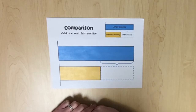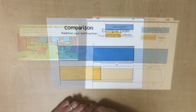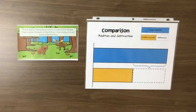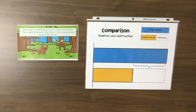Specific comparison recording sheets have been provided for each story problem in this part of the unit. A common misconception when attempting to solve story problems is a reliance on keywords. Rather than understanding the structure of the problem, the student may make a plan solely based on a word they read in the problem. For example,